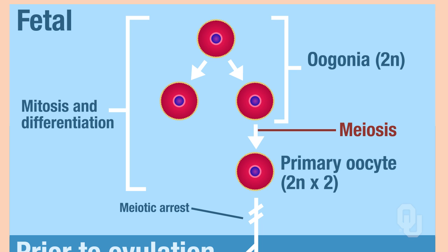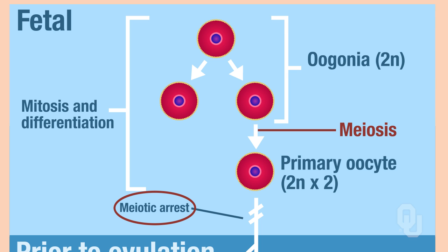Meiosis begins during fetal development, but it is not completed during fetal development — it is only beginning. During fetal development, the primary oocyte is produced through meiosis. Then that primary oocyte is going to undergo what's called a meiotic arrest, and the baby is born.